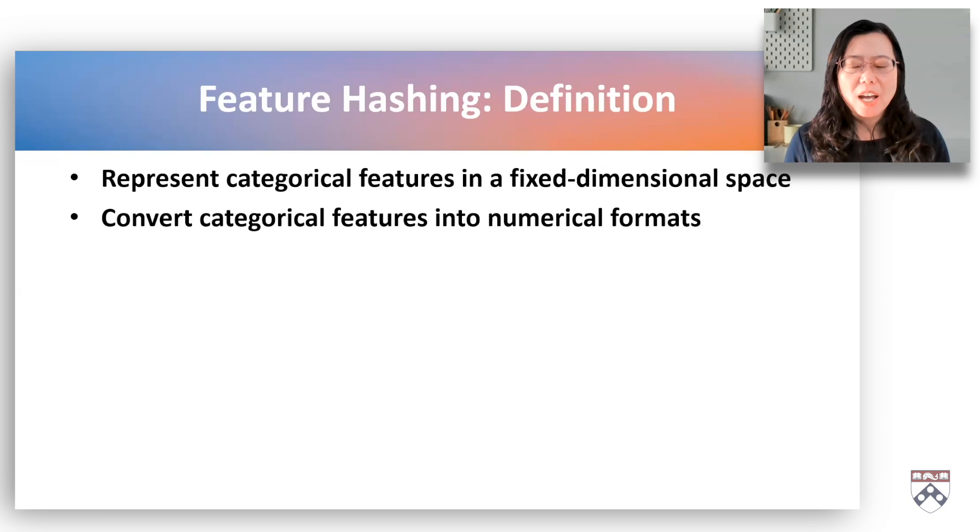The idea behind feature hashing is to convert categorical variables into numerical formats suitable for input into machine learning algorithms, especially in situations where the number of unique categories is large.